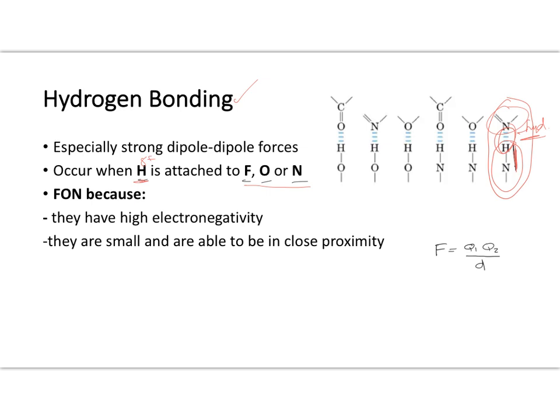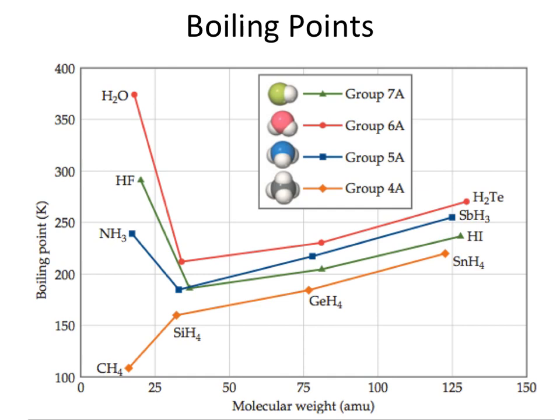Based on Coulomb's Law, large charges from strong dipole moments and very small distances are going to lead to strong intermolecular forces. So let's quickly talk about how intermolecular forces affect boiling point: the stronger your intermolecular force, the higher your boiling point, because in order to get things to go from the liquid phase into the gaseous phase, we must overcome those intermolecular forces.